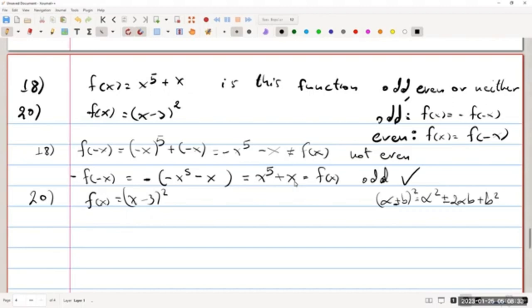So expanding this one out will give us x squared minus 2 times 3 times x, so minus 6x plus the square of 3 is 9. Now I proceed with this formula to calculate f of minus x. This will give me minus x squared minus 6 times minus x plus 9, which is equal to,